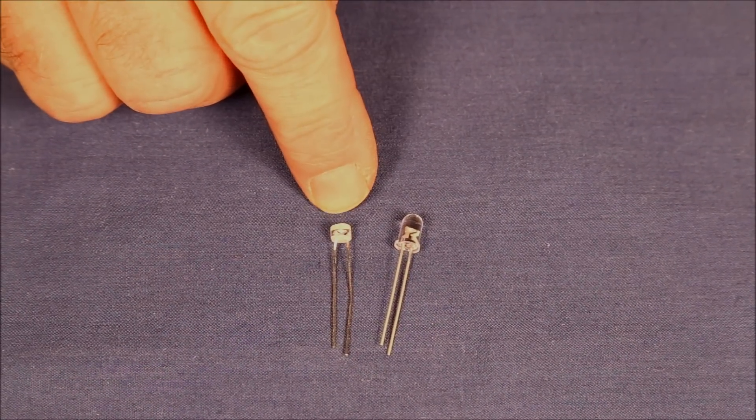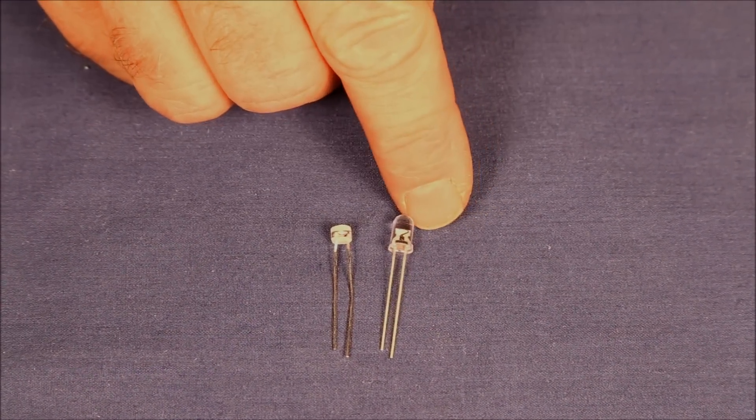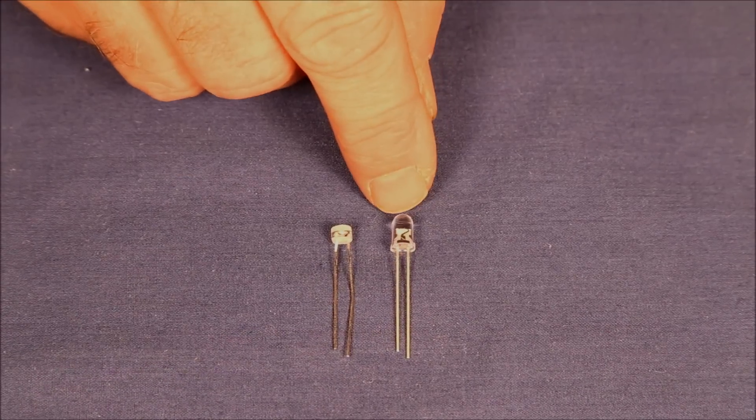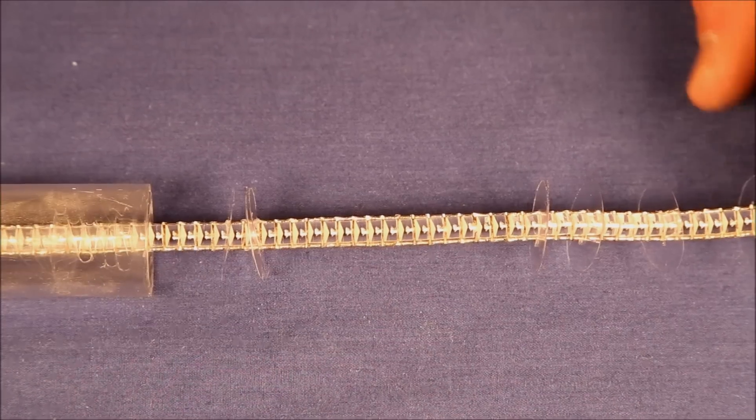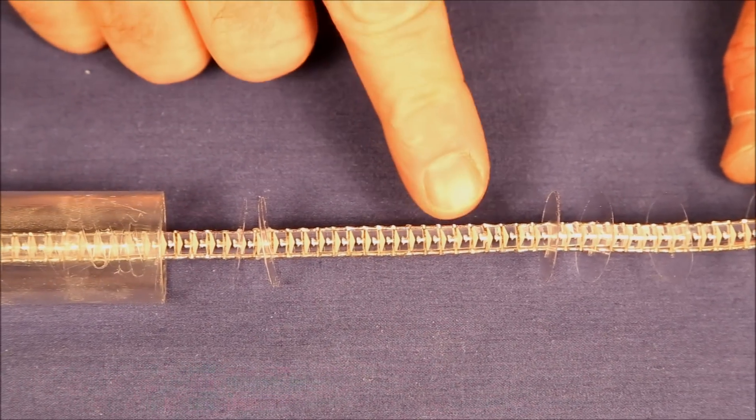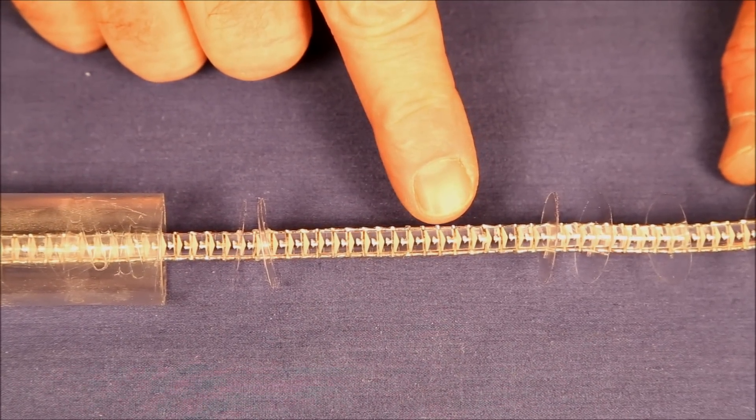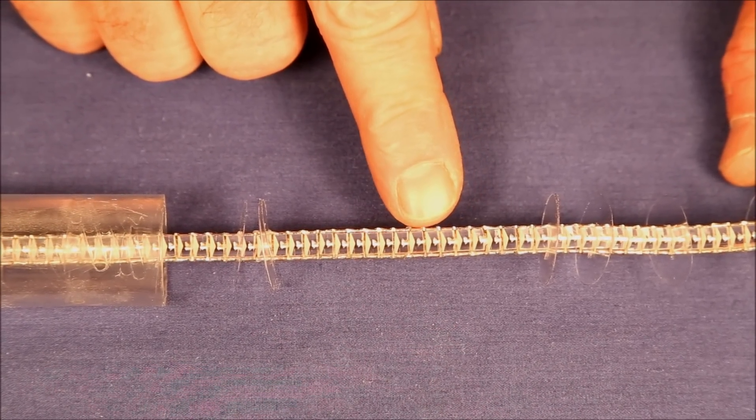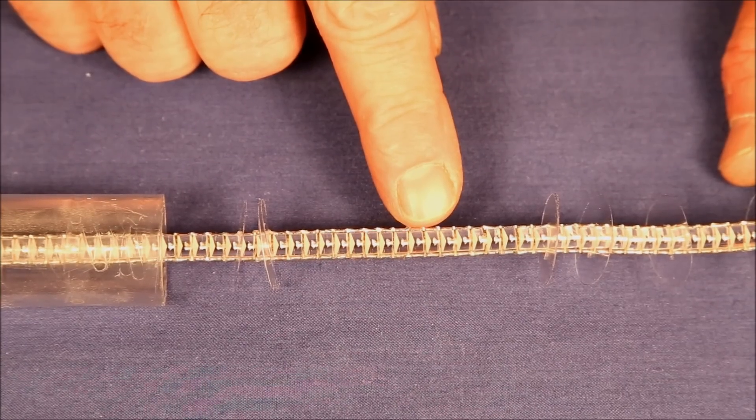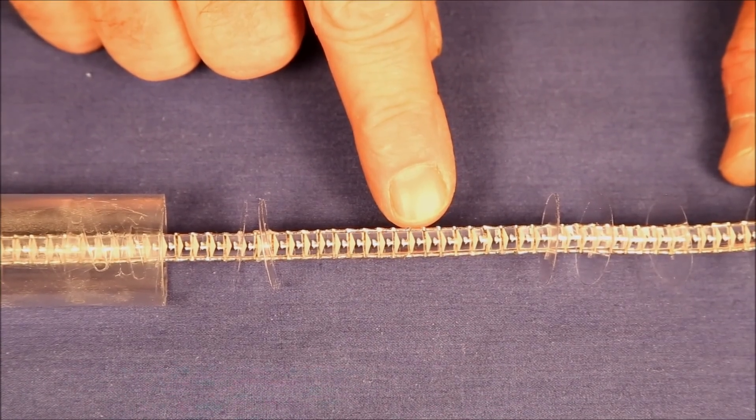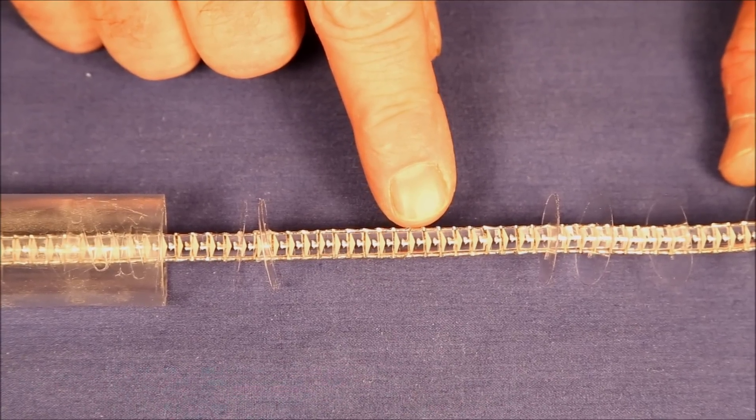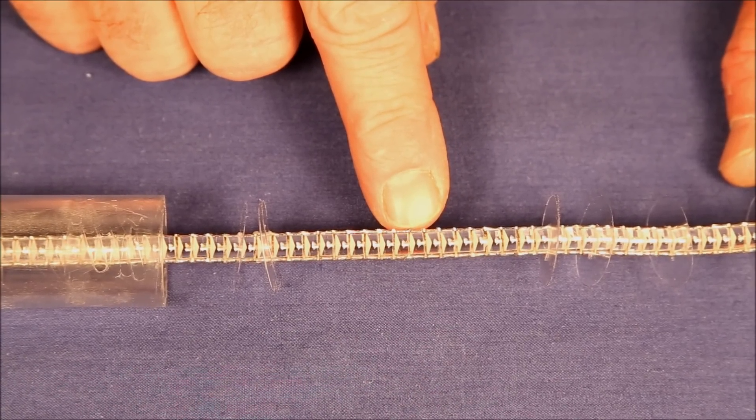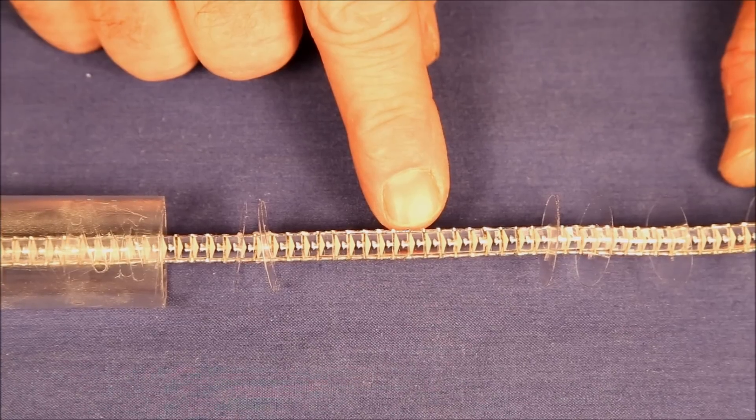This eliminates most of the problem of the previous LED shining its light into the next LED. What that enabled me to do was shorten the distance between each LED to the point where there were now seven LEDs per inch, almost three times as many as a comparable high-end lightsaber.